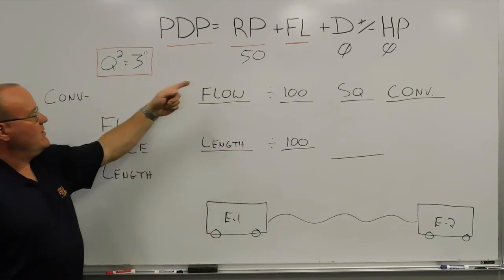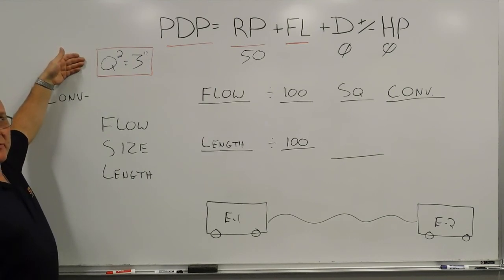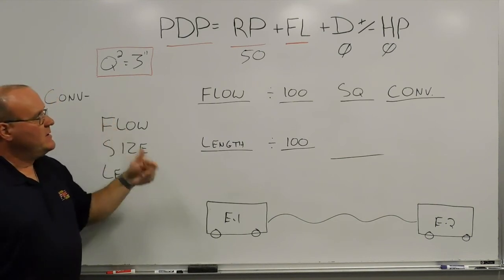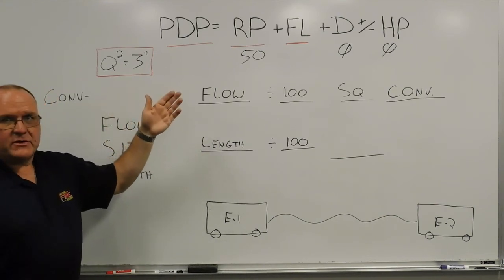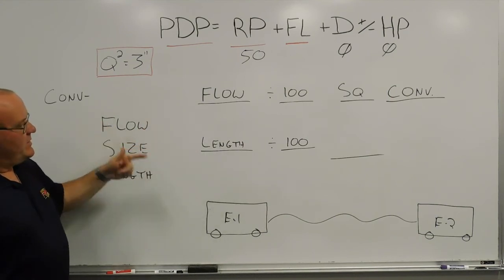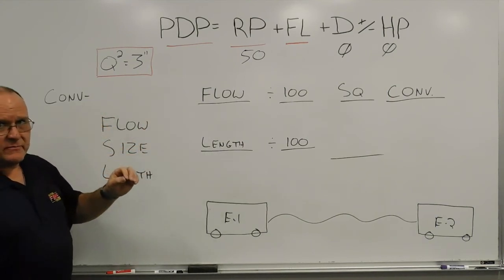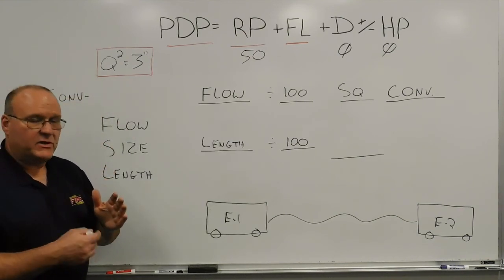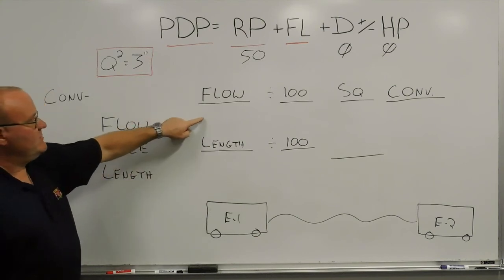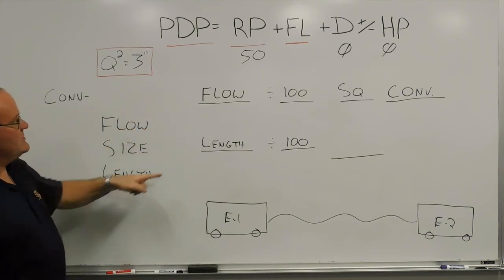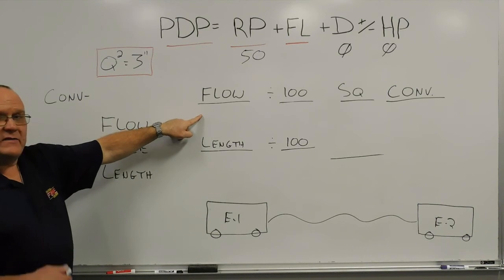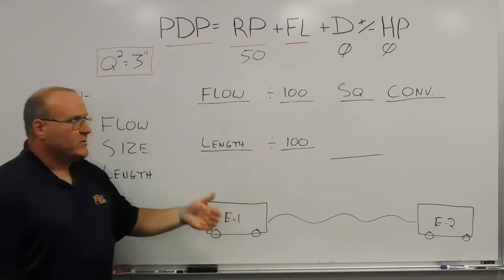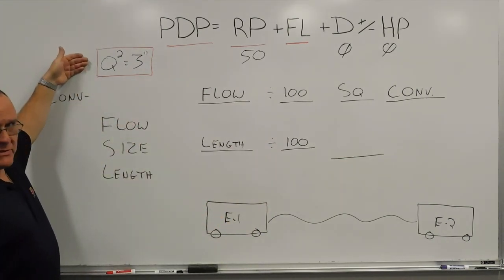Using friction loss and the hand method using the Q-squared method. In the previous training minute we worked with 3-inch hose and a couple different flows to get our pump discharge pressure. We're going to move up in hose size and talk about 4-inch hose. Starting with the baseline using the hand method, it's always Q-squared, which takes the flow — we divide that gallon-per-minute number by 100 and then square it, which gives us a 3-inch hose friction loss number.